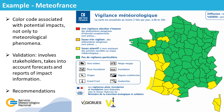Météo-France also has a color code warning and recommendations, but they don't use the impact matrix. So here we don't have different possibilities for orange, for example, depending on the likelihood and the risk of impact. But impact information is considered, together with the meteorological one, to decide the level of the warning. They use climatological thresholds, but they are not deterministic. So it may happen, for example, that the knowledge related to the impact can change the color of the warning suggested by the threshold.